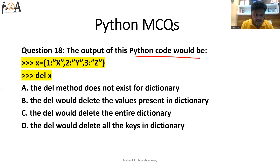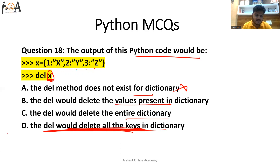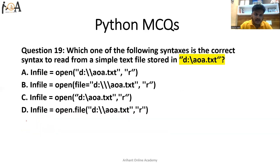Question number 18: what would be the output of this Python code? We have x equals to 1, x2, y3, and z as keys represented in a dictionary, and we are using del x to delete. The del method does delete values present in the dictionary — it would delete all the keys in the dictionary. It does not delete the entire dictionary, but it deletes all the keys present. So option B is the correct answer.